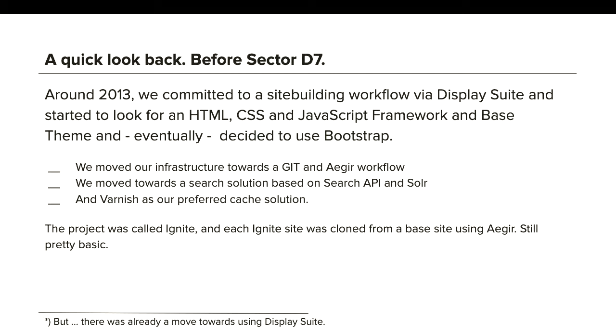Around 2013 we changed this. We committed to a full workflow using site building and Display Suite. Around this time we also looked for a front-end design system and chose Nucleus. We moved our infrastructure towards Git and Agar — things that are totally normal now. We moved towards a search-based solution with Search API, and we had our preferred cache solution. The project was called Ignite, but each Ignite site was still a clone from a base site. We had a core which nobody was allowed to touch without reviews — but it was still pretty basic, and you can't open source this.